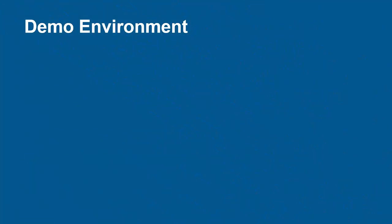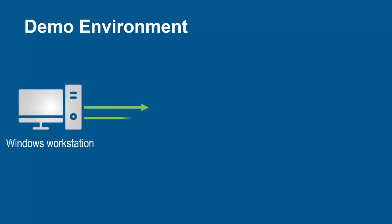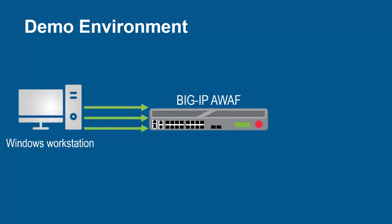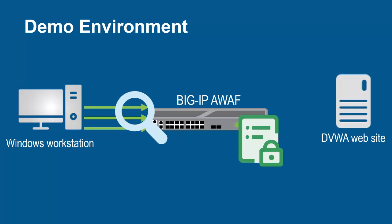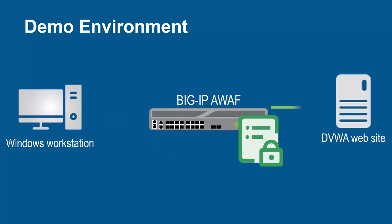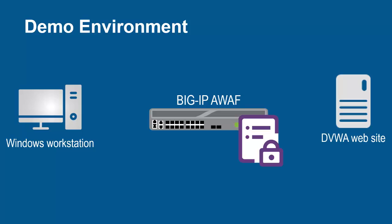The environment for this demo contains three devices. A Windows workstation will be used for sending requests to update the existing security policy. These requests will arrive at the F5 BIG-IP system running Advanced WAF. The BIG-IP system already has an Advanced WAF security policy used to protect the backend web application. Using its full proxy architecture, it examines every request before sending them to the backend web server, allowing BIG-IP Advanced WAF to update the existing web application security policy.